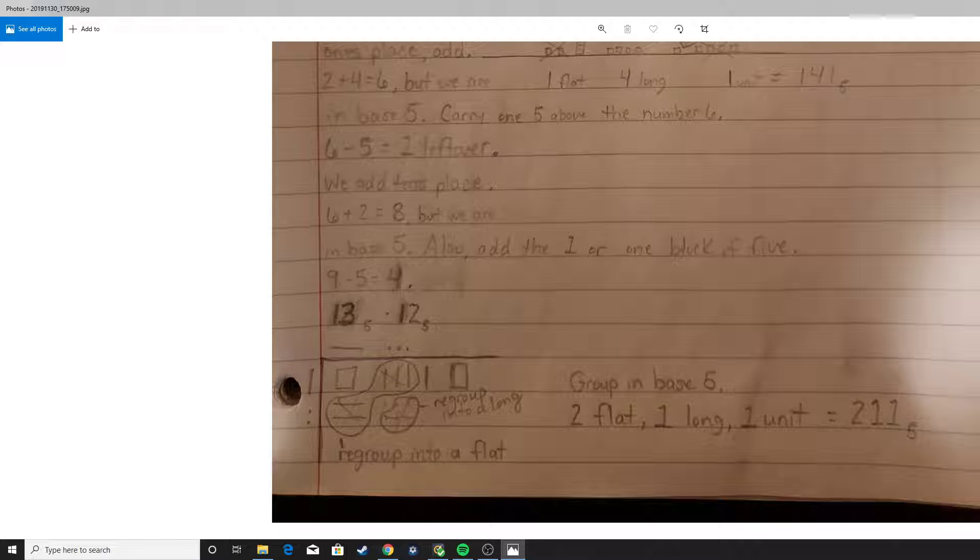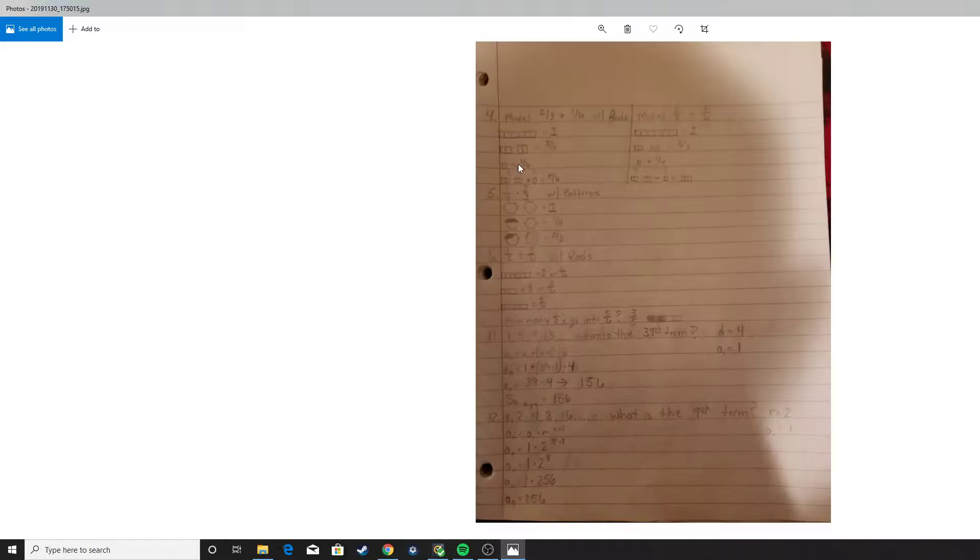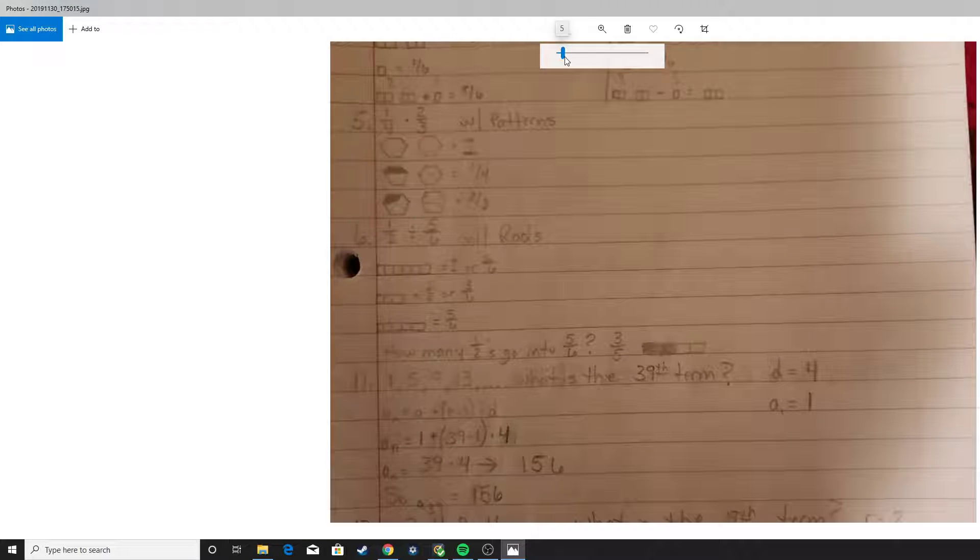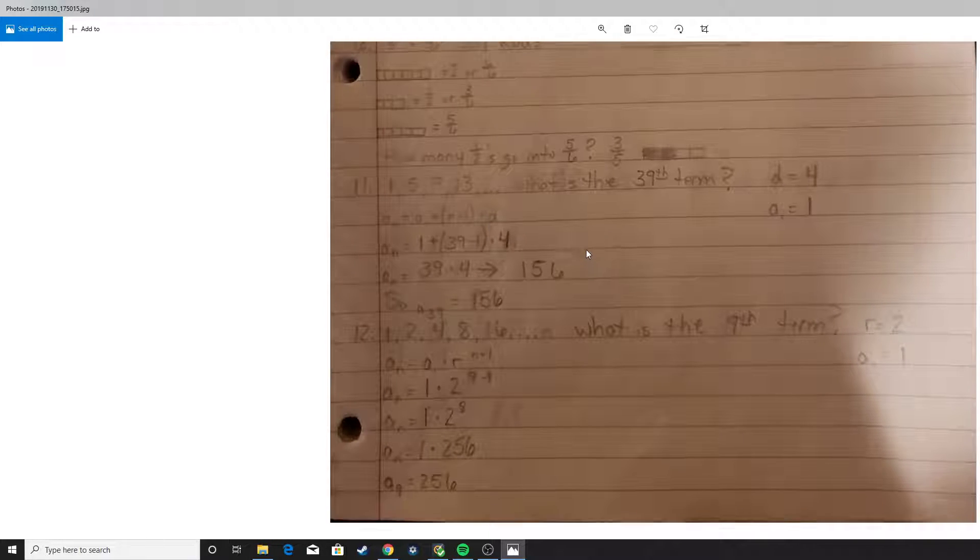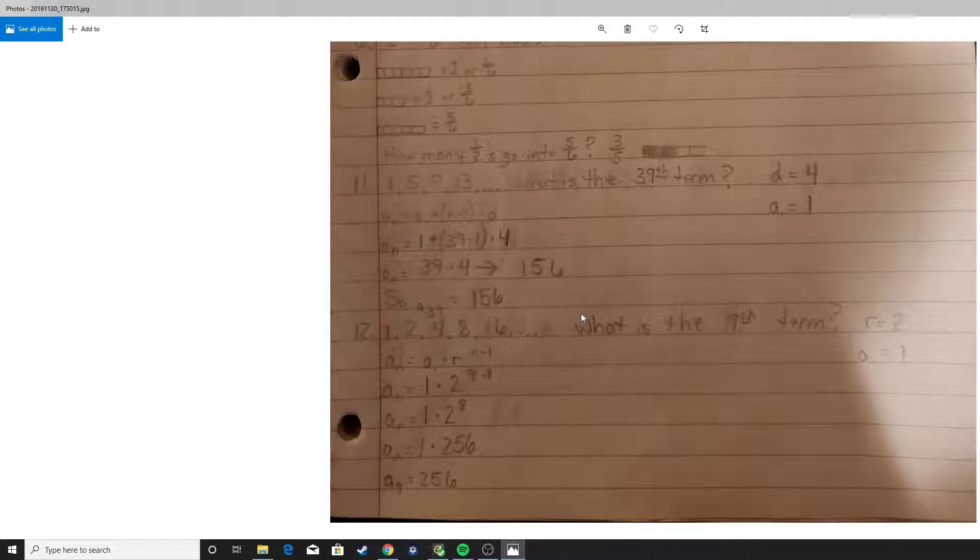Now I'm going to go ahead and go into another problem here. Let's look at finding the nth term right here. So we have a sequence 1, 5, 9, 13. And if we look at this sequence, we notice that the difference between the numbers is a plus 4. So we know right away that this is an arithmetic sequence. Now the question to the problem is, what is the 39th term? So we're trying to find the nth term, basically. And I just kind of chose that we wanted to find the 39th term.